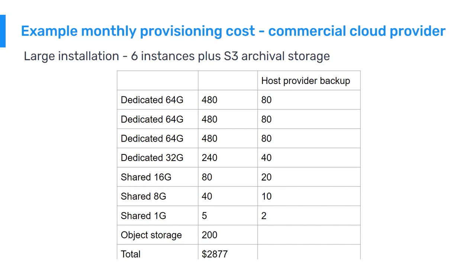Importantly, the backup plan was considered from the outset. Most host providers offer the option of virtual machine snapshots, and they've decided to pay for that. In addition, they use longer-term S3 object storage, which turns out to be quite cheap, for handling all their backups at about $200 a month. This gives them a monthly infrastructure fee of just under $3,000.